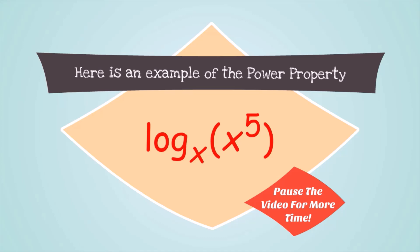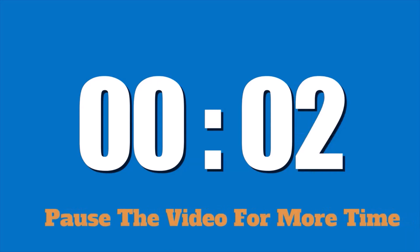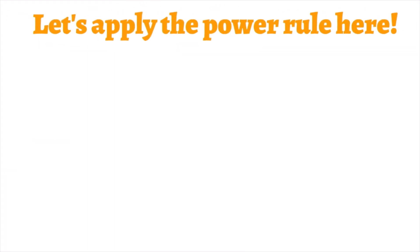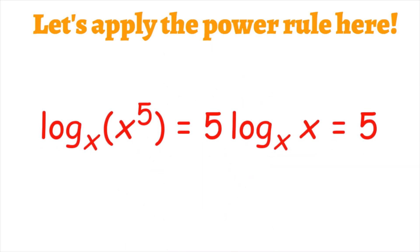Here is an example of the power property: simplify log base X of X to the power of 5. Let's apply the power rule. We can write log base X of X to the power of 5 as being equal to 5 times log base X of X. And log base X of X is just equal to 1, so our answer is 5 times 1, or 5.